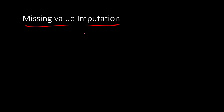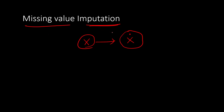Missing value imputation is a machine learning problem where the input data has missing values that need to be replaced using information from other input data. It is also a sub-problem in many other machine learning algorithms such as regression and classification. Given information x about a particular feature, you should be able to replace missing values — denoted as x-dot — with some estimated number. Such problems are known as missing value imputation.